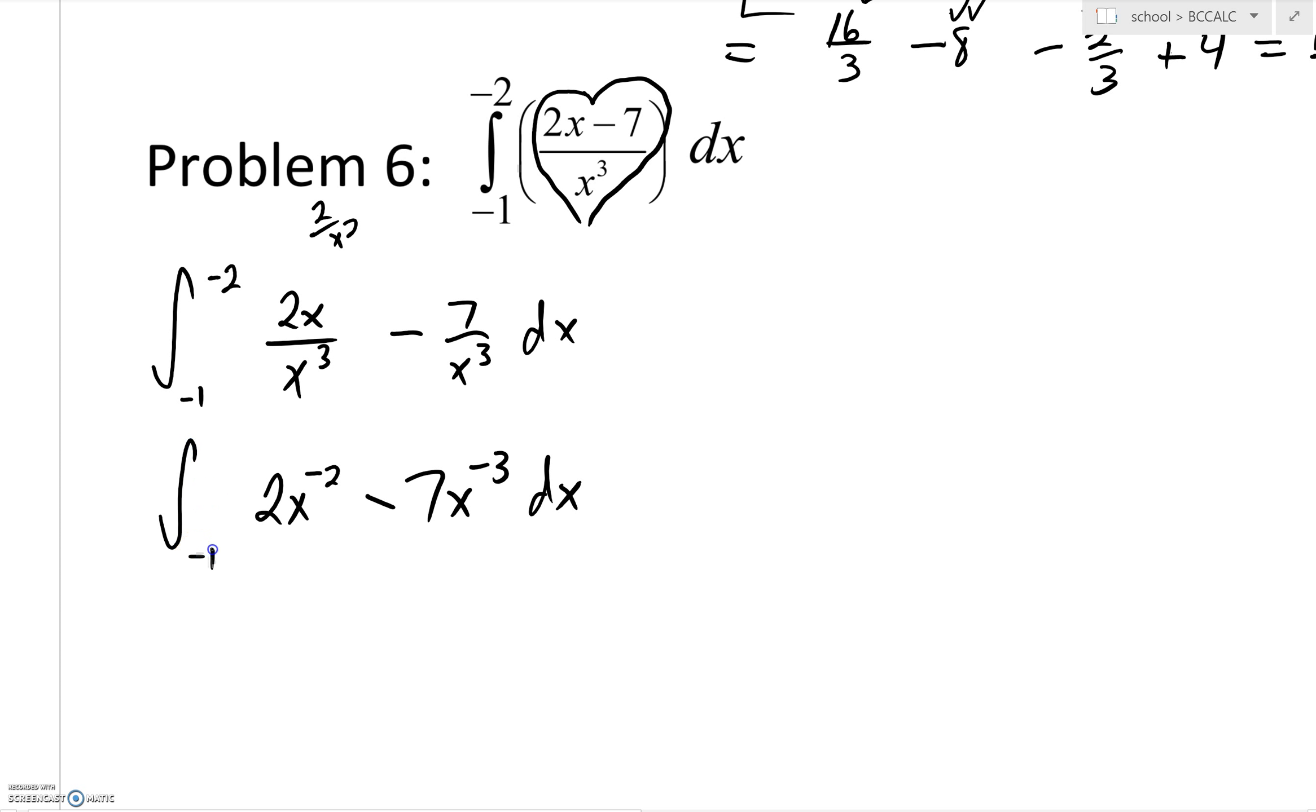So at this point, you've got some choices on what you'd like to do. Some kids really dislike seeing that bound being negative 1 on the bottom and negative 2 at the top. I do want to tell you that you can do this problem as is. You truly don't have to make a change.